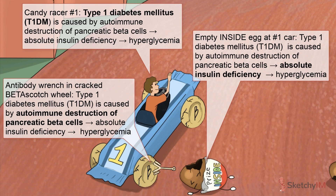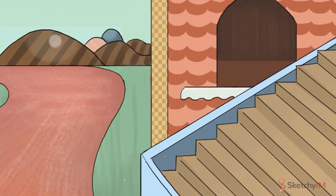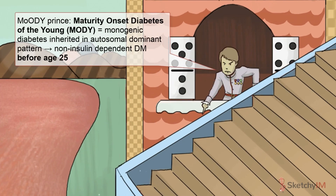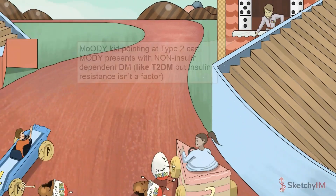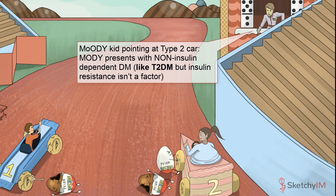In addition to type 1 and type 2 diabetes, there are also other less common diabetes syndromes. The first is maturity-onset diabetes of the young, aka MODY, represented by this moody prince, angry that the favored cheesecake car is out of the running this year. MODY is the most common form of monogenic diabetes, meaning it's caused by a single gene mutation. MODY is inherited in an autosomal dominant pattern, symbolized by these recurring autosomal dominant domino shutters. The underlying pathophysiology of MODY is slightly different from both type 1 and type 2 — insulin secretion isn't severely impaired as in type 1, and insulin resistance isn't a factor as in type 2. MODY presents with non-insulin-dependent diabetes in patients before age 25. Like most type 2 diabetics, MODY patients are not dependent on insulin.